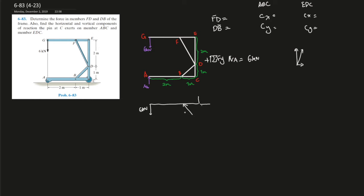So the force is pushing on the drawing because it's being compressed by the whole system. If this is going this way, then that means this force is going the opposite direction. For this force, let's just draw it in tension and see what happens — if we get negative numbers, we will change the sign later. Over here, this is force FD. This is a two-force member, so we're going to leave it with components EY and EX.